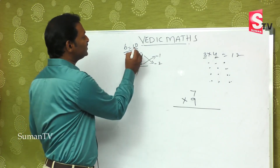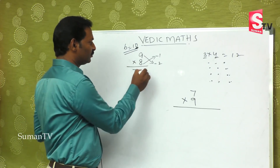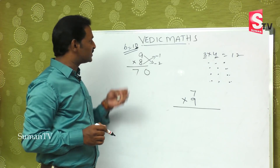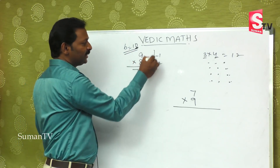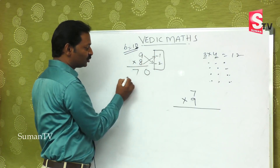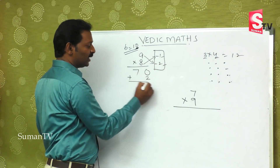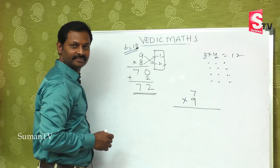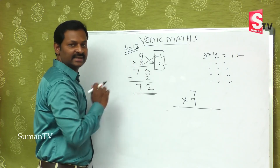Then, what do you do with this? Minus into minus is plus, so 1 times 2 is 2. The answer is 72. So, 9 times 8 is 72.